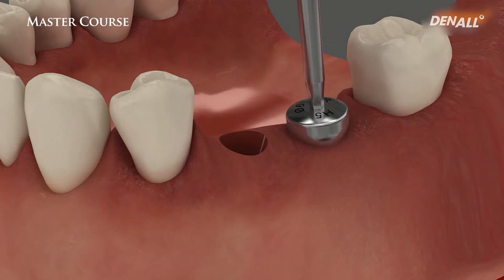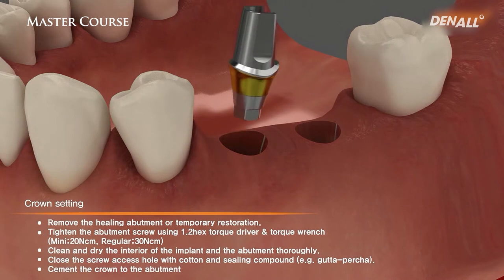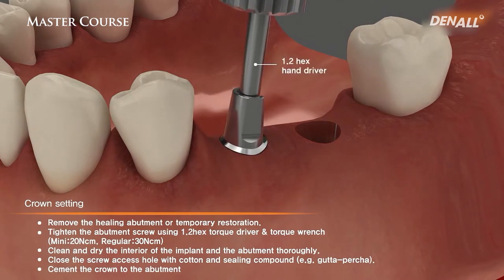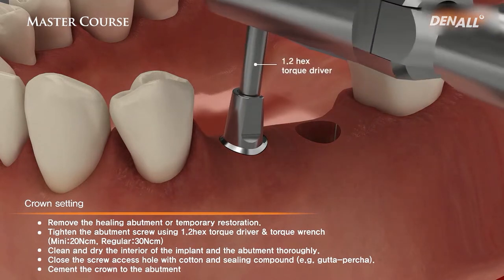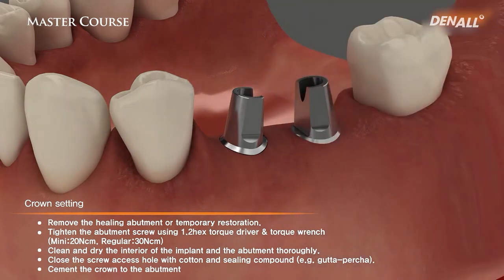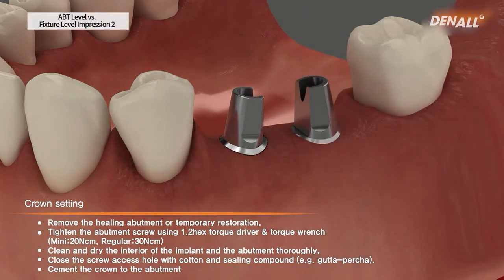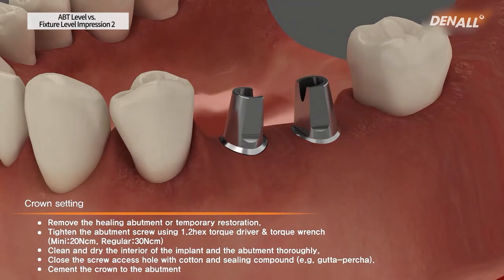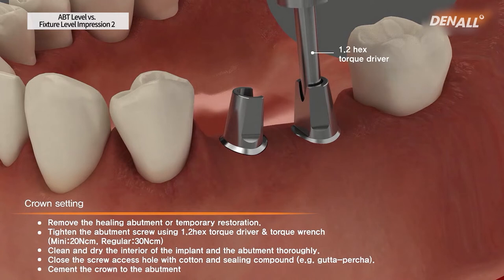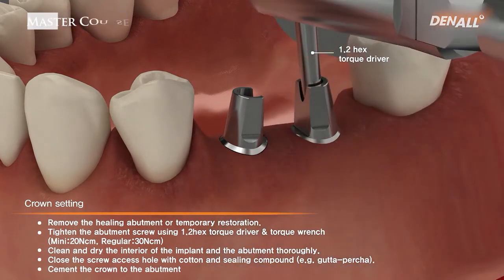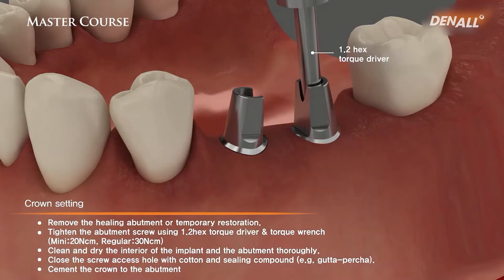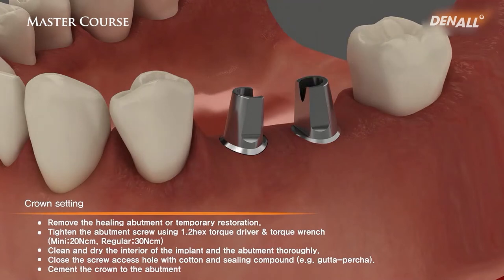The healing abutment is unscrewed again. Then the abutment, using the hex, is positioned, set, delivered, and connected correctly. The positioning created in the lab is used for the positioning in the clinic to go in the right place. With the cementation, everything will be complete. 3D positioning and how the impression coping is used for taking impressions — I hope that through this video you have gained more understanding.